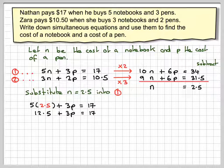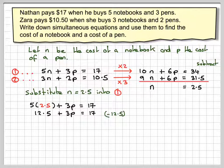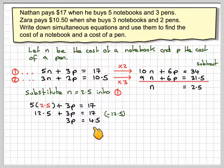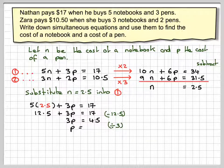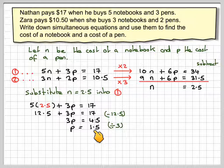Now you can use your calculator, so you shouldn't worry about the decimals here. Taking 12.5 from both sides, we're going to get that 3P equals 4.5, and then dividing by 3, we get that P equals 1.5.